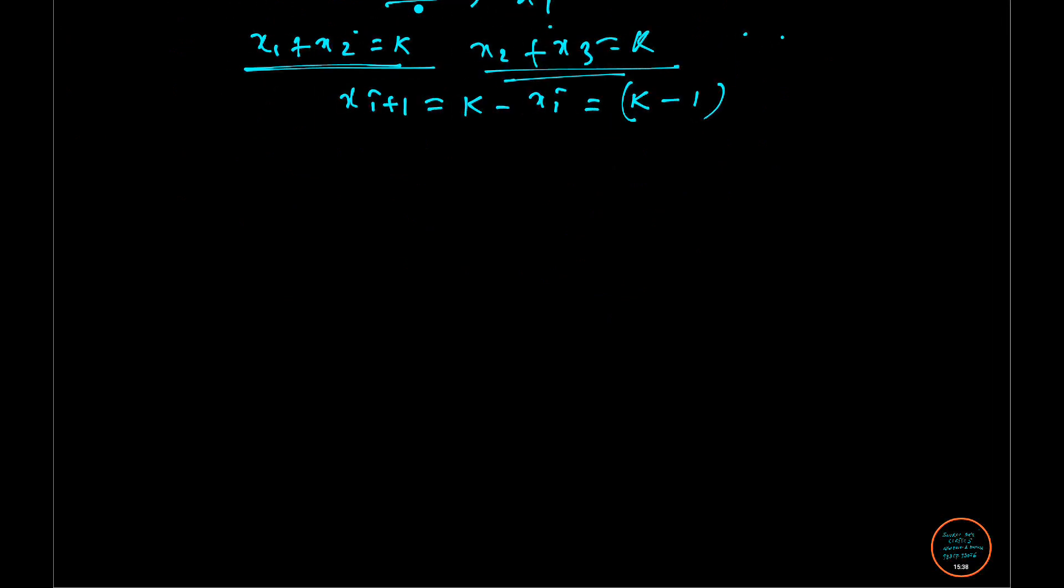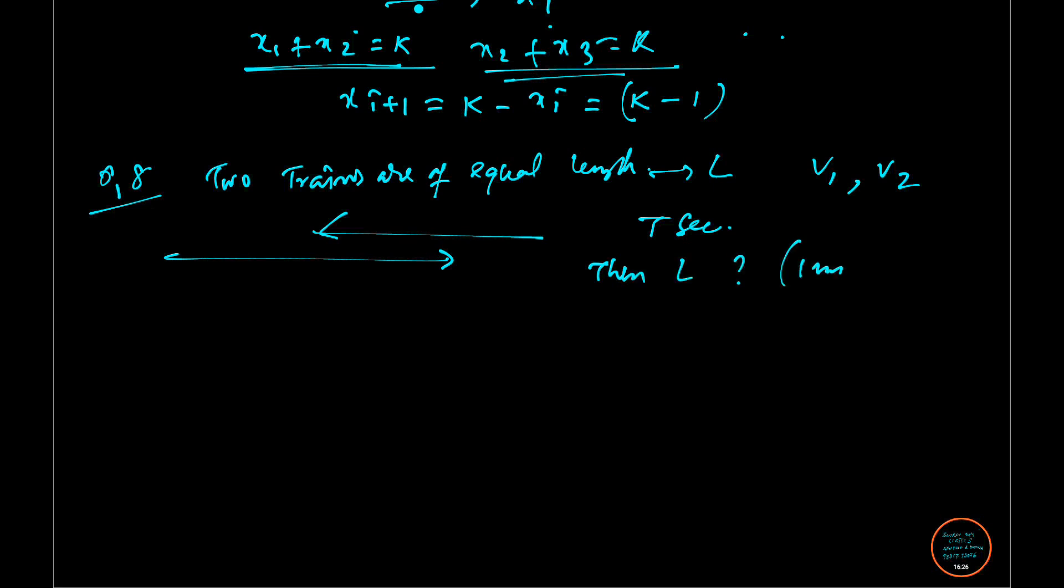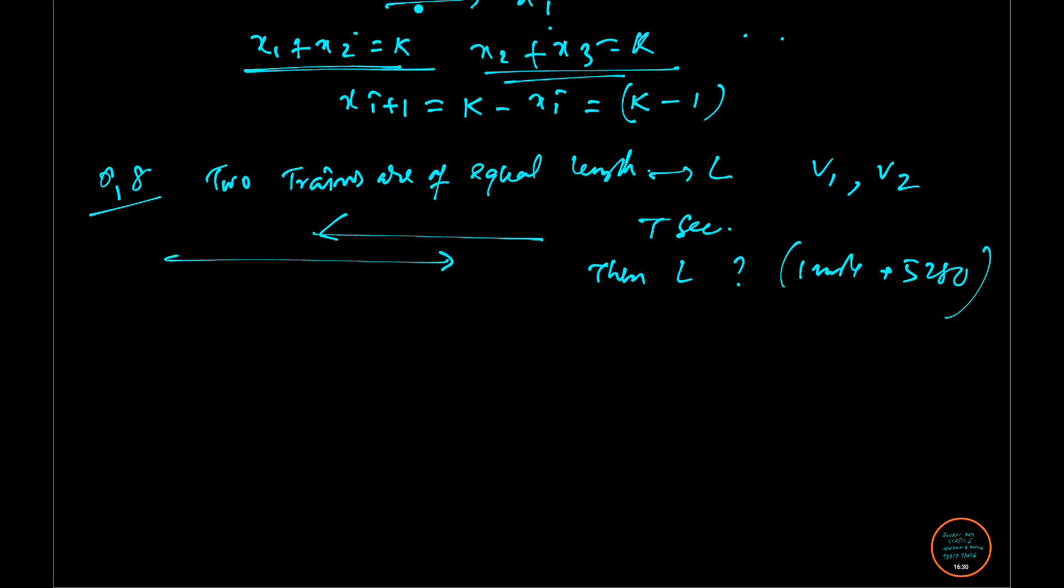The next question is question number 8. Here they have given two trains are of equal length. Two trains are there and they are of equal length. And the length is also given as L. They are traveling at the speed V1 and V2 miles per hour in opposite directions. This is the direction based structure. And it takes T seconds to cross each other. It takes T seconds to cross each other. Then L in feet. Then they have asked us to find L in terms of feet. Where they have given 1 mile equal to 5280 feet. That is given.